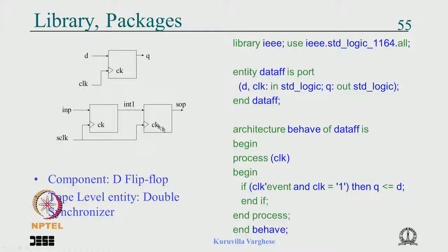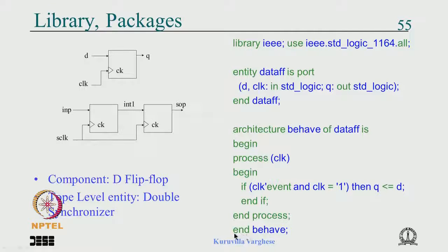The D flip-flop code: library IEEE; use IEEE.std_logic_1164.all; entity data_flip_flop is port (D, clock: in std_logic; Q: out std_logic) end data_flip_flop; architecture behave of data_flip_flop is begin process(clock) begin if clock'event and clock is equal to 1 then Q gets D end if end process end behave.